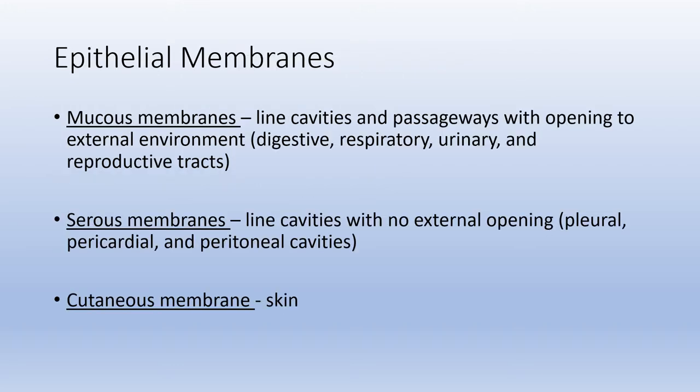The three main types of epithelial membranes are the mucous membrane, serous membranes, and cutaneous membrane. Mucous membranes line cavities and passageways that have an opening to the external environment — things like your digestive tract, respiratory tract, urinary and reproductive tracts. All of those have openings to the outside, so they have mucous membranes.